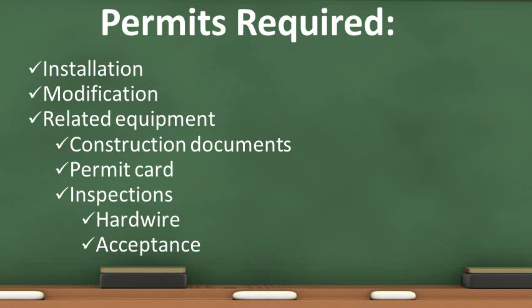The California Fire Code requires a permit for the installation and modification of fire alarm systems and all related equipment. Construction documents are required to be submitted along with the permit application. Once the construction documents are reviewed and approved, a permit card will be issued. A visual inspection of the different types of appliances and devices is required prior to system installation. An inspection of the hard wire is conducted before the drywall is installed. An acceptance inspection is conducted to test all the appliances and installed devices.